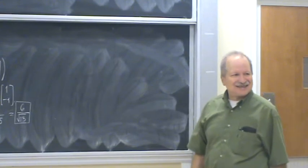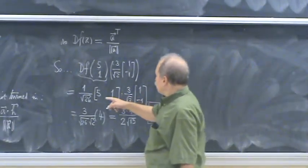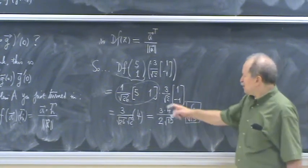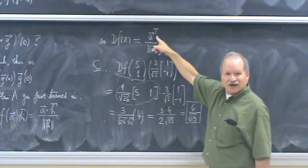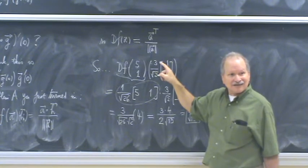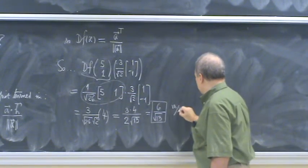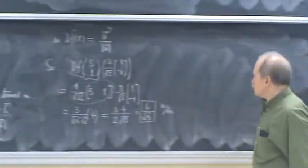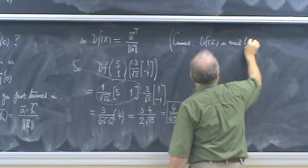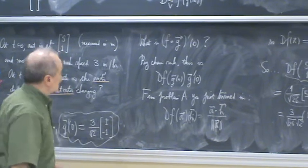Do the units check? You've got units of meters in the numerator but you're dividing by meters — so that's unitless — and then this is in meters per hour. So this is unitless times meters per hour, giving meters per hour, which makes sense — that's what a rate of change of distance should be in those units. Note the comment here is that df is unitless, and that's because you're doing displacement per unit displacement, so the meters cancel.